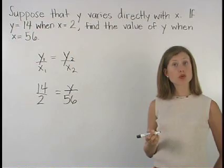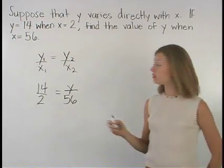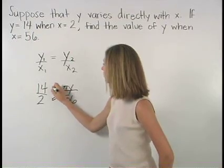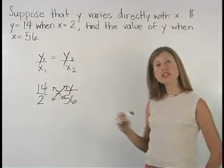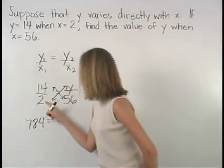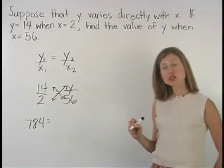Now, we can solve for Y using cross products. 14 times 56 is equal to 784, and 2 times Y is equal to 2Y.